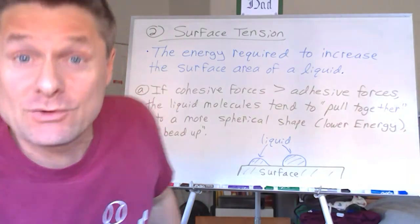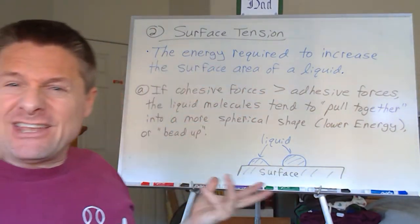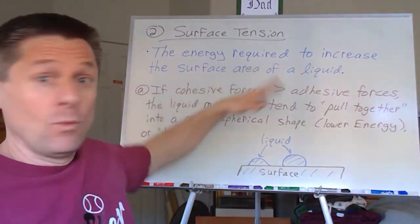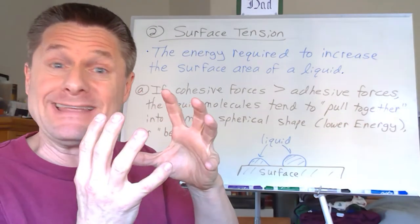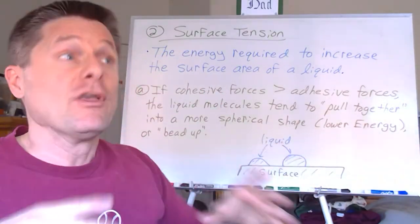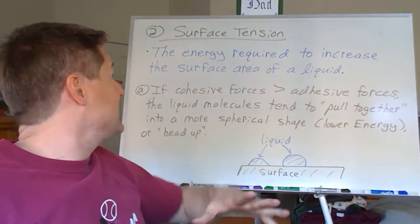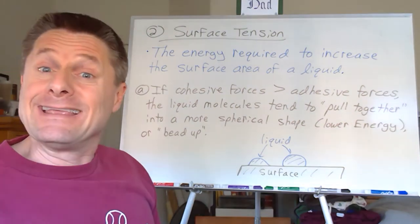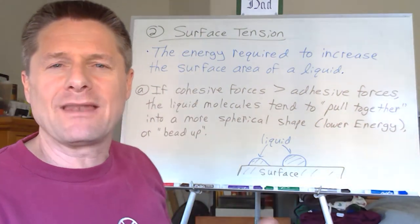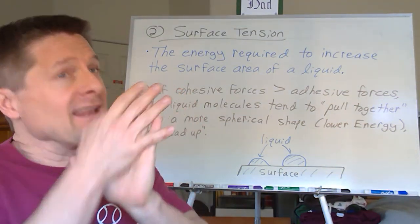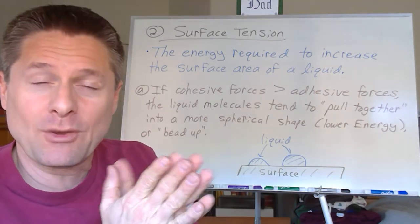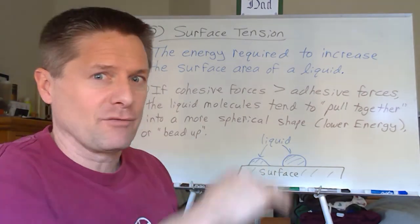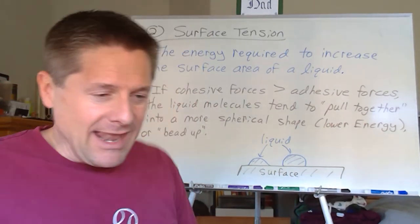Now let's look at surface tension. If you take a liquid in contact with a surface, does it spread out? The liquid molecules have cohesive forces — they like to be together. To pull those liquid molecules apart and spread them over a surface requires energy. That energy required to increase the liquid's surface area is surface tension. There are quantitative numbers for this, but we won't focus on that.